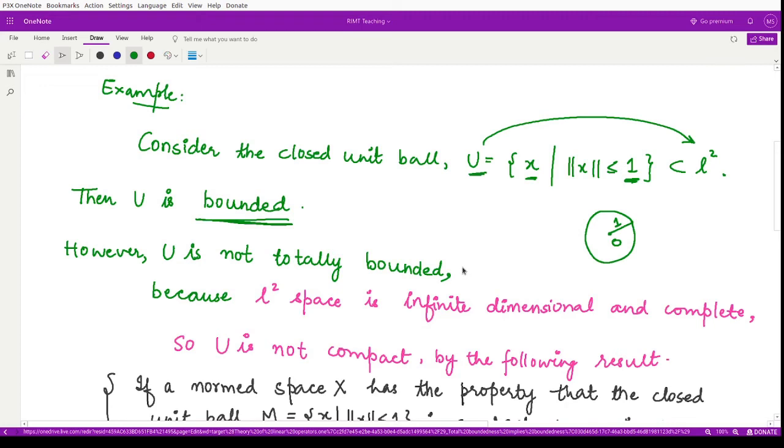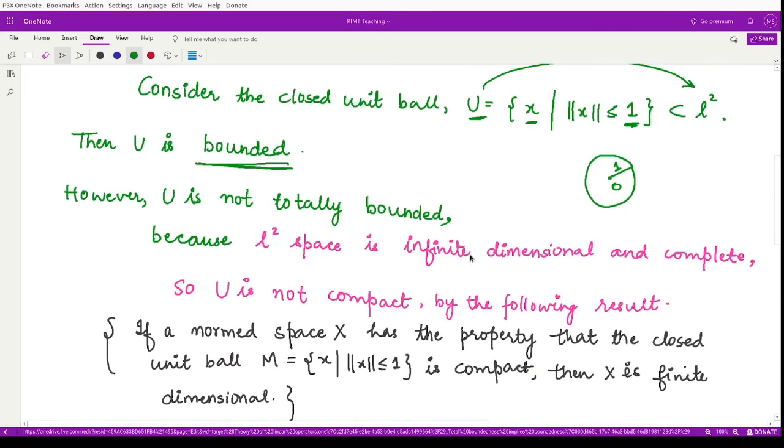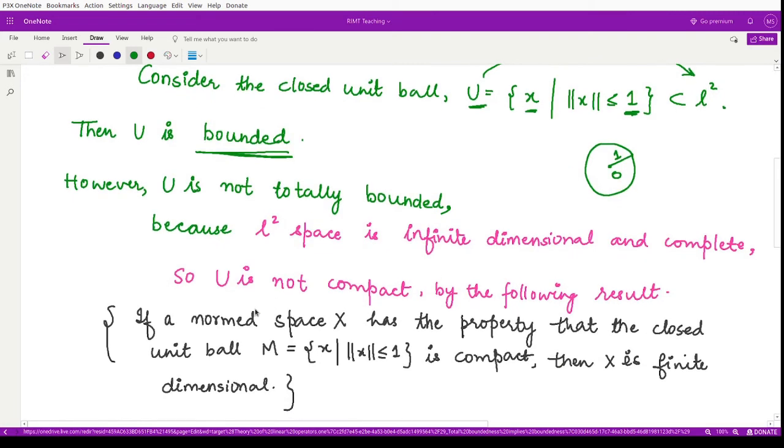not totally bounded. How so? We can see this through a theorem or result which we have learned. This says if a normed space X has the property that the closed unit ball, which is given by M, is compact, then X has to be finite dimensional. So in this case,